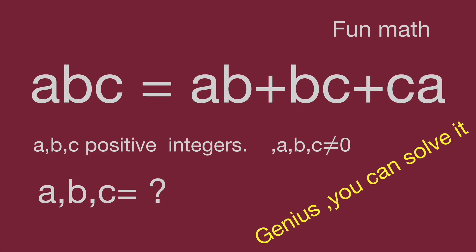While a·b·c equals a·b plus b·c plus c·a, where a, b, c are positive integers and a, b, c not equal to zero. Find the number group for a, b, c. Would you please pause and try this question? Pause the video and try it while you are ready. Keep watching the video to get the result.